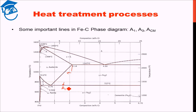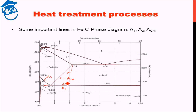The A1 line is the eutectoid line, also called the lowest critical temperature. The line separating austenite and the dual-phase ferrite-plus-austenite region is the A3 line. For hypo-eutectoid steel we will be concerned with A1 and A3, whereas parallel to A3 in the hyper-eutectoid region we have the Acm line.